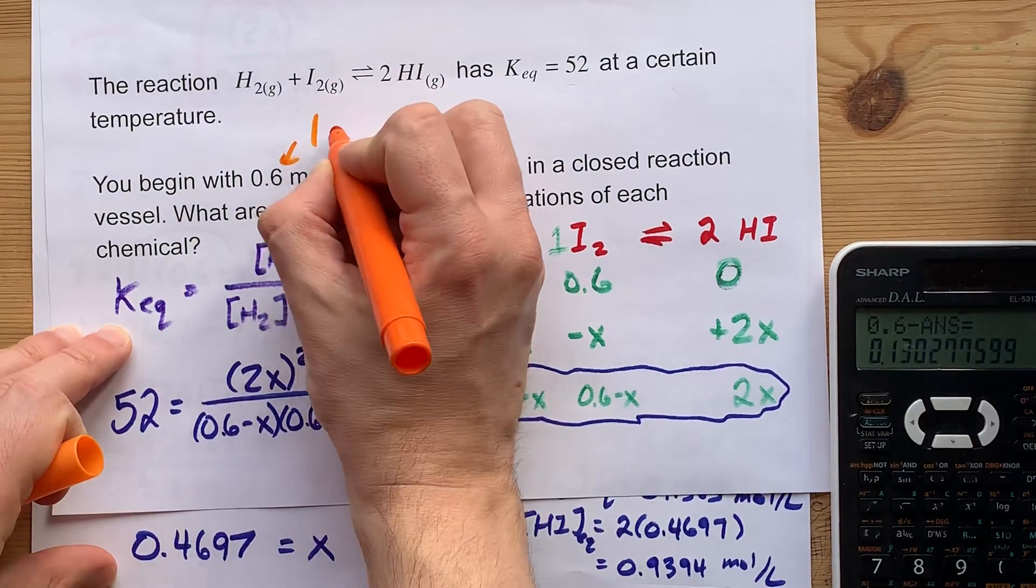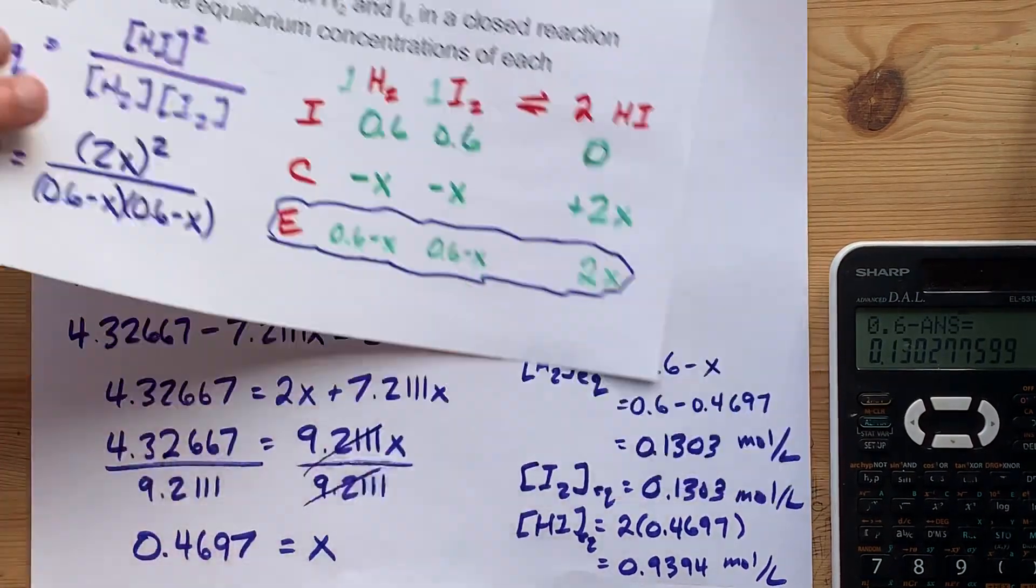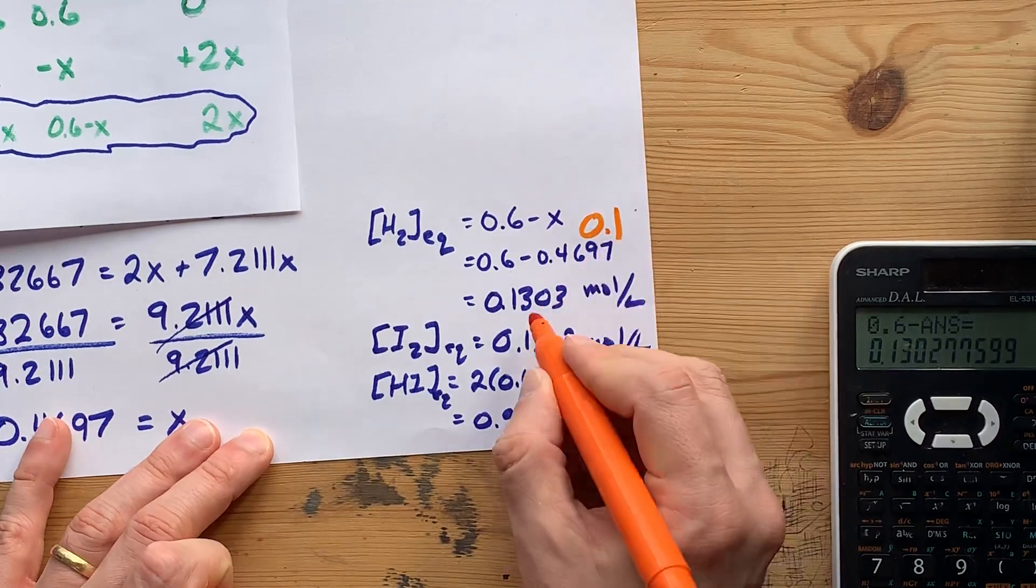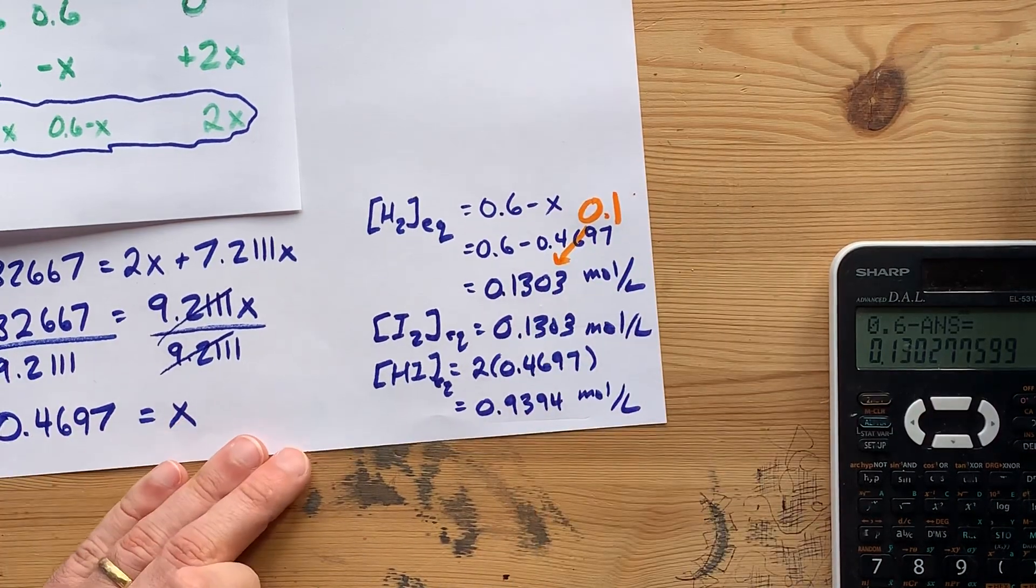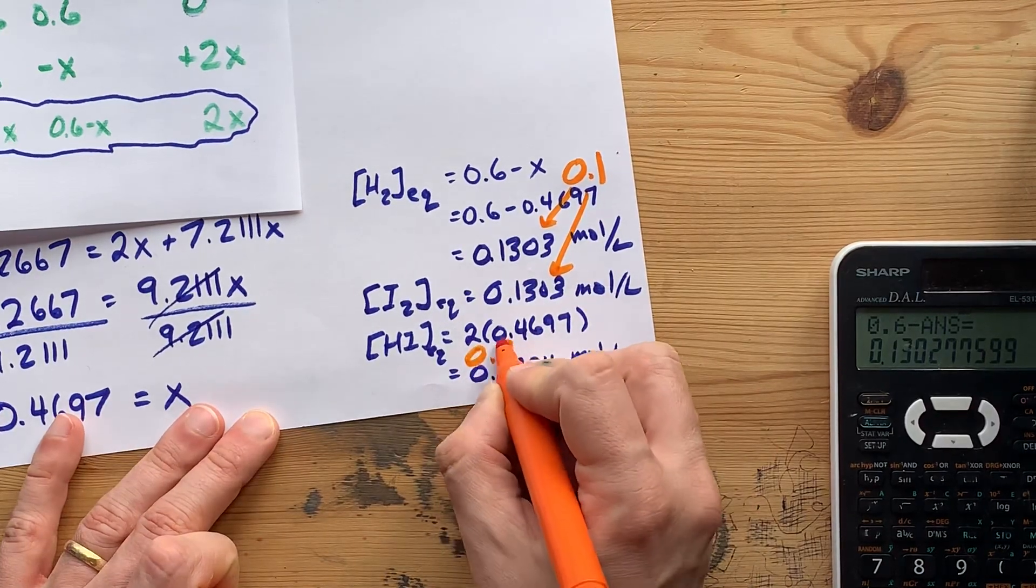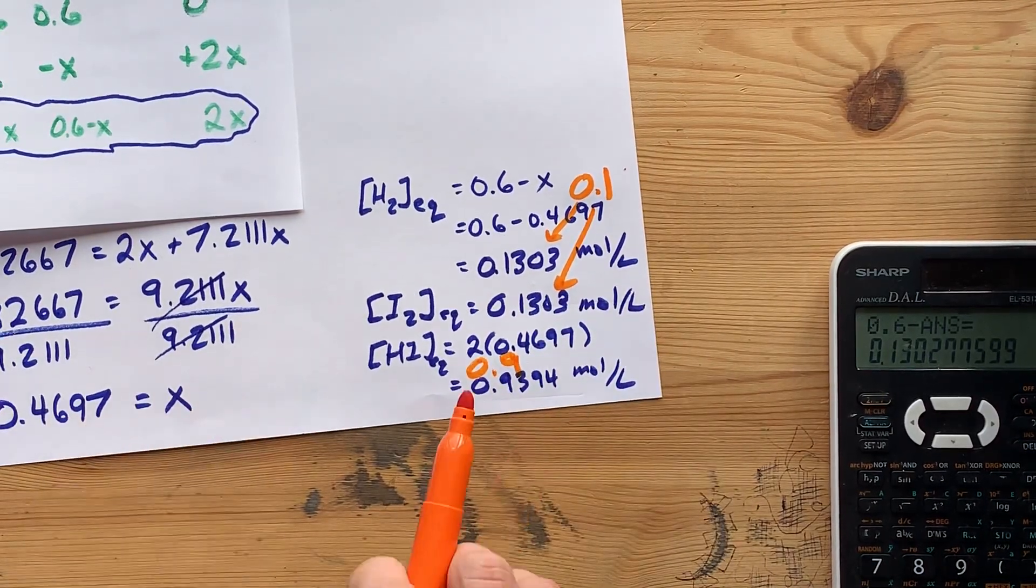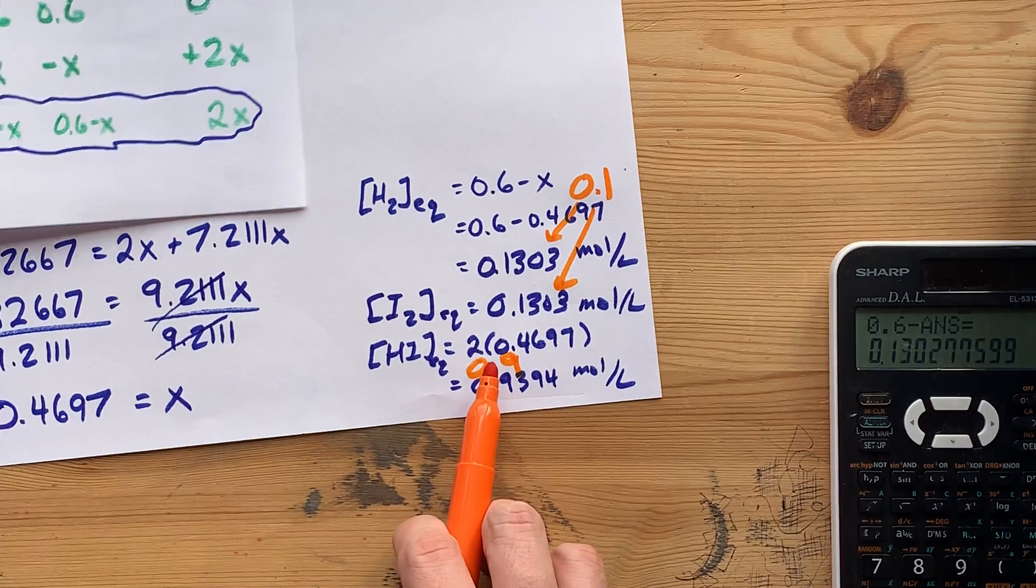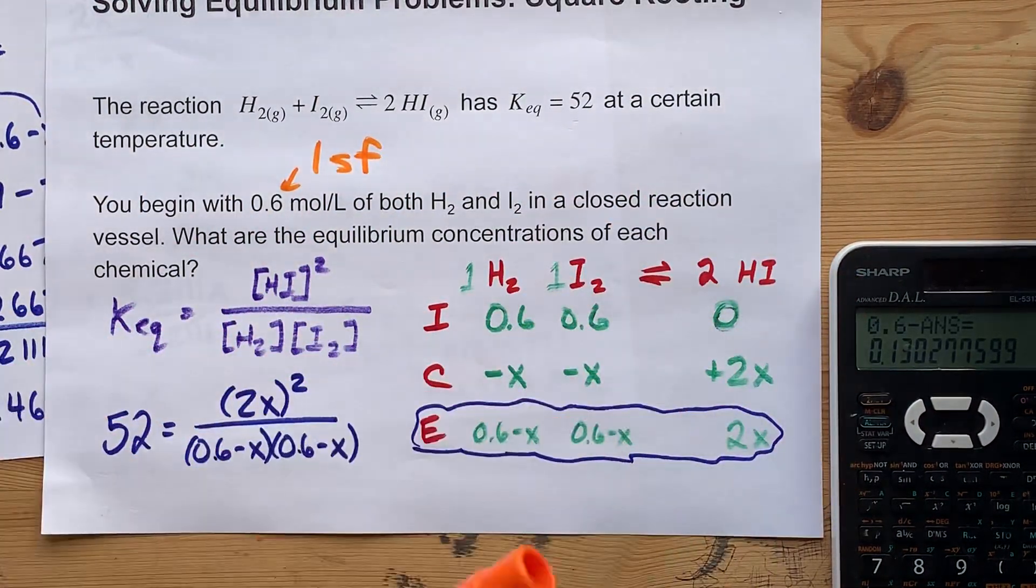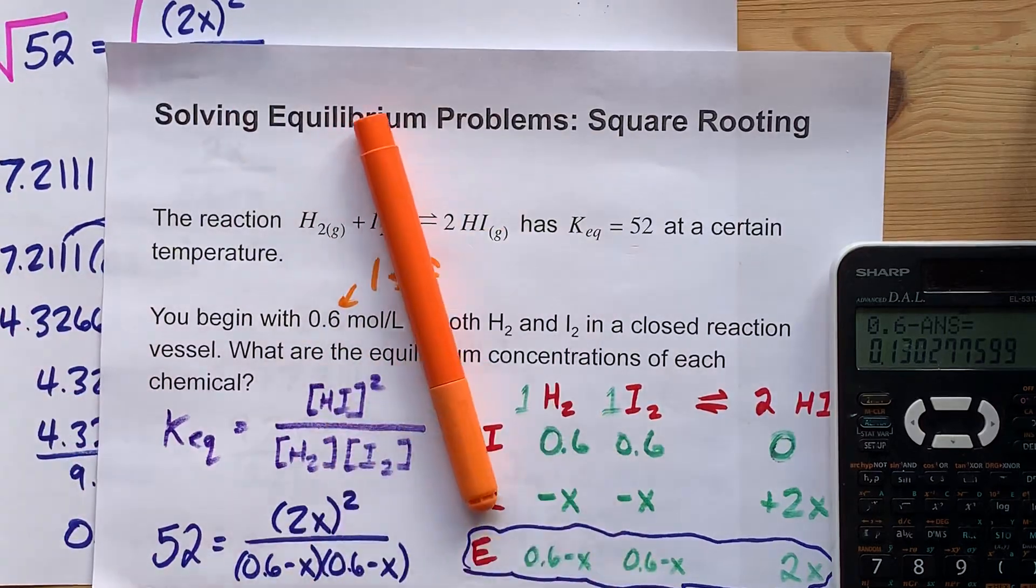So your final answers are actually just 0.1 for this one, 0.1 for that one, and 0.9 for that one. You're only going to use the one digit if you only had one in your original. But hey, that's the way the game goes. Best of luck.